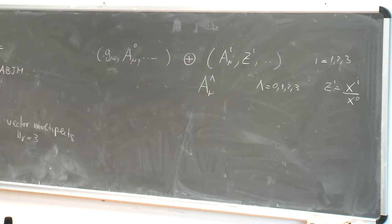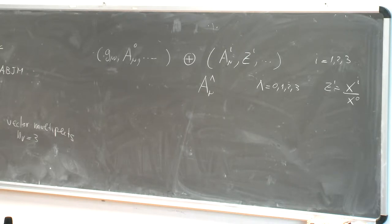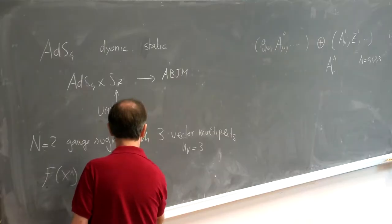There are four holomorphic sections, the same number as the vectors, but only three are independent. One way of fixing the physical scalar is to take the ratio — it's not the only one. The Lagrangian will be invariant under a rescaling of the section X, so you get three degrees of freedom. These are complex degrees of freedom — the scalars are complex. So you need to specify the prepotential.